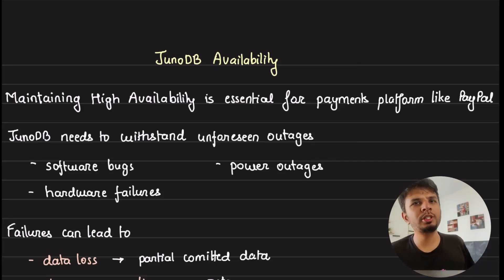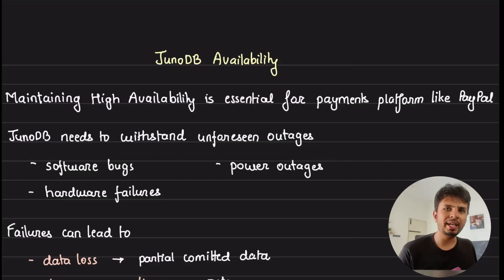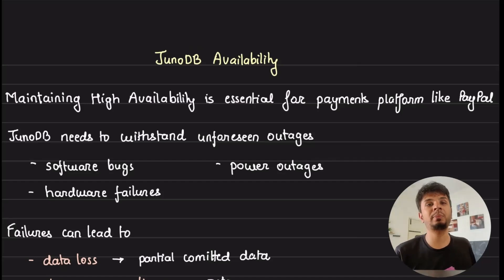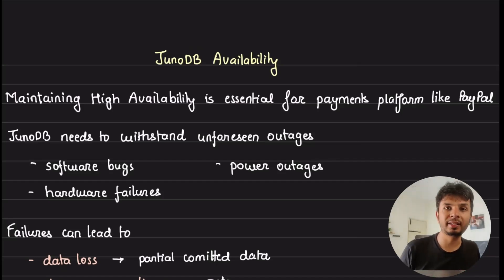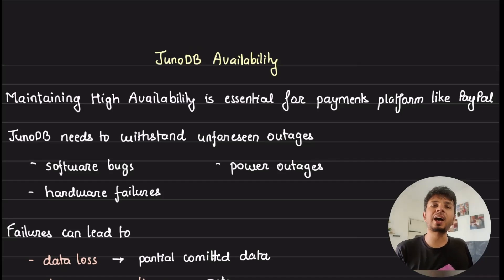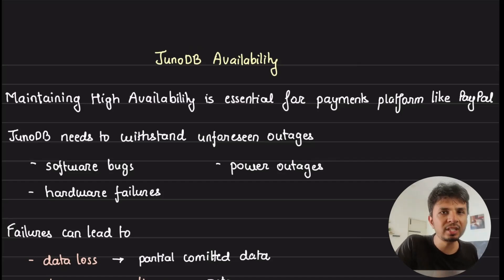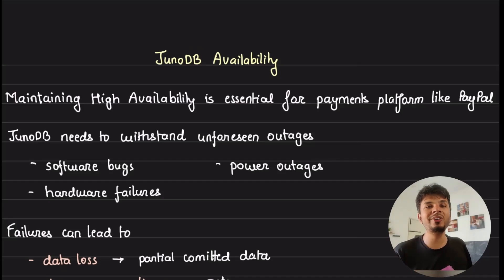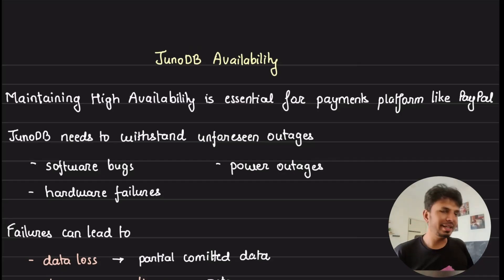PayPal recently open-sourced their key-value database named JunoDB, and I spent a few days going through it to understand its features and guarantees. In this series of videos I'll be going through the database and talking about key details and design decisions they took while building it. This is the fourth video of the series, and in this one I'll be talking about how JunoDB uses data redundancy to achieve six nines of availability — a deep dive into designing highly available distributed data stores.